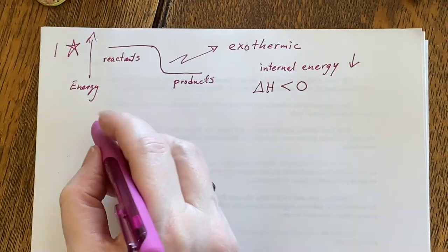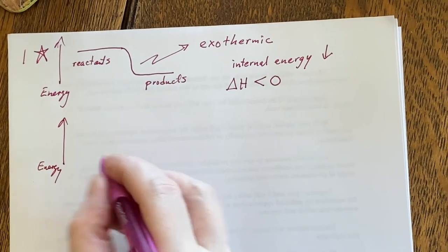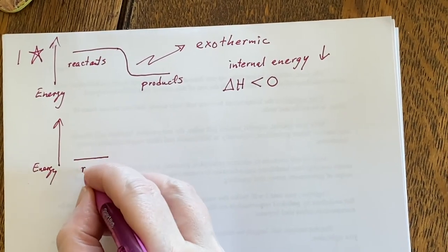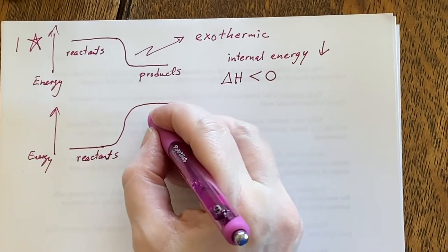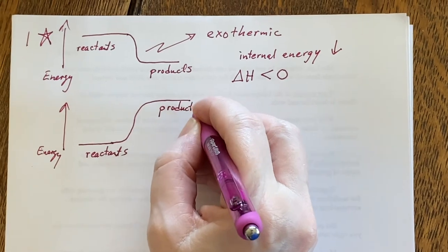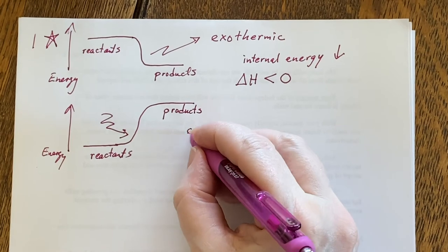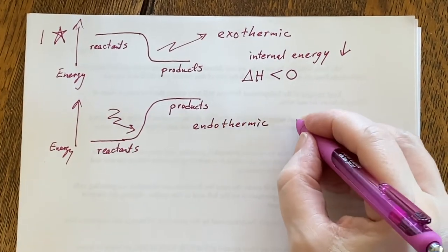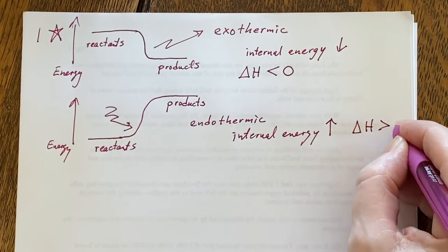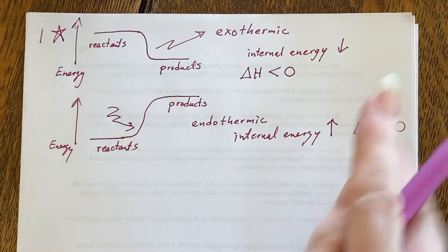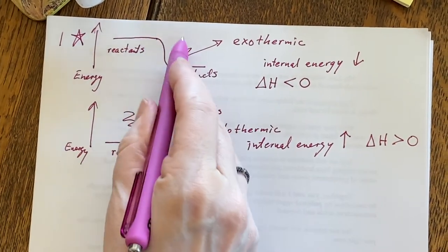This would be listed as delta H being less than zero. On the other hand, we could have the same situation the other way around, but we still have energy. We could start with reactants at a lower energy and raise that up so that the products have higher energy. Well, that means that we had to put energy into it. So this is endothermic and the internal energy increased. And that's why the delta H is positive because the internal energy increased. This difference is delta H and this was a positive difference, and this was a negative difference.